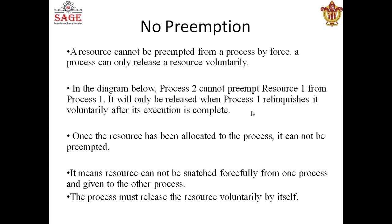The next condition is no preemption. As we studied in CPU scheduling, preemption means forcibly taking a resource away. No preemption means you cannot take a resource from a process unless the process voluntarily releases it. A resource cannot be preempted from a process by force. A process can only release a resource voluntarily — meaning when the process completes its execution. Once a resource has been allocated to a process, it cannot be preempted.